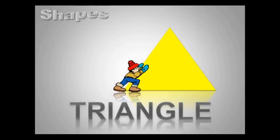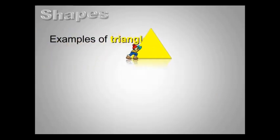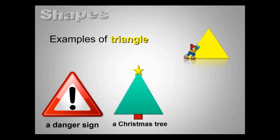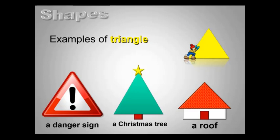This is a triangle. A triangle has three sides and three corners. A danger sign, a Christmas tree, the roof of a house are triangle in shape.